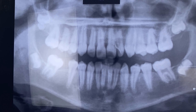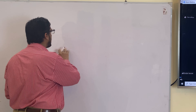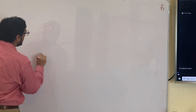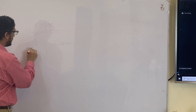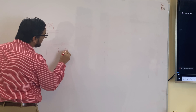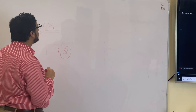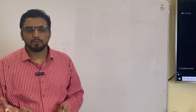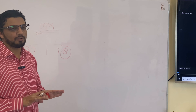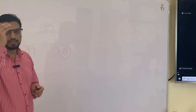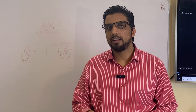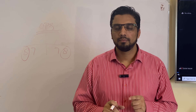The first radiograph required is the OPG. Why? We want to see the status of the eighth (third molar). Hypodontia of the seventh is very rare, but the first thing to check in the OPG is whether the eighth is present. If the eighth is congenitally absent and you extract the sixth, you would be left with only one molar in that quadrant.